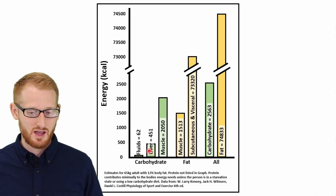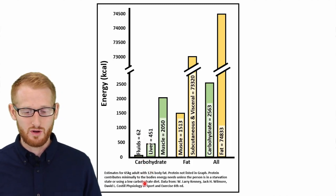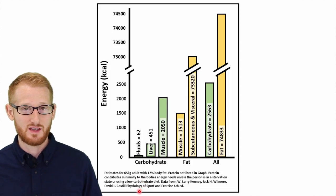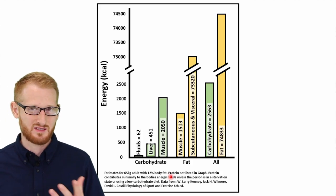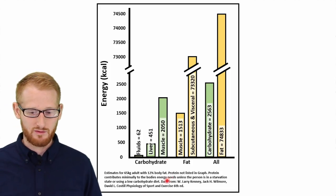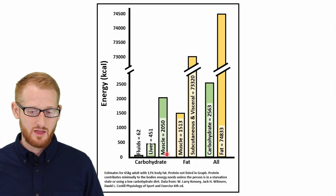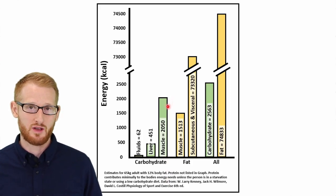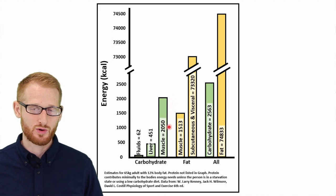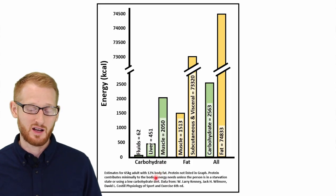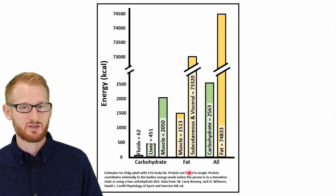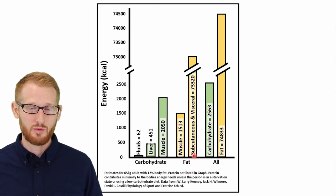About 450 or so kilocalories of energy in glycogen is stored in the liver in a typical lean, healthy young male. The muscle has a lot more storage capacity for glycogen, though we can still burn through all of it. Looking at fat, the muscle stores about 1,500 kilocalories of fat, but we have a ton of fat stored subcutaneously and viscerally — between the organs deep inside the body.